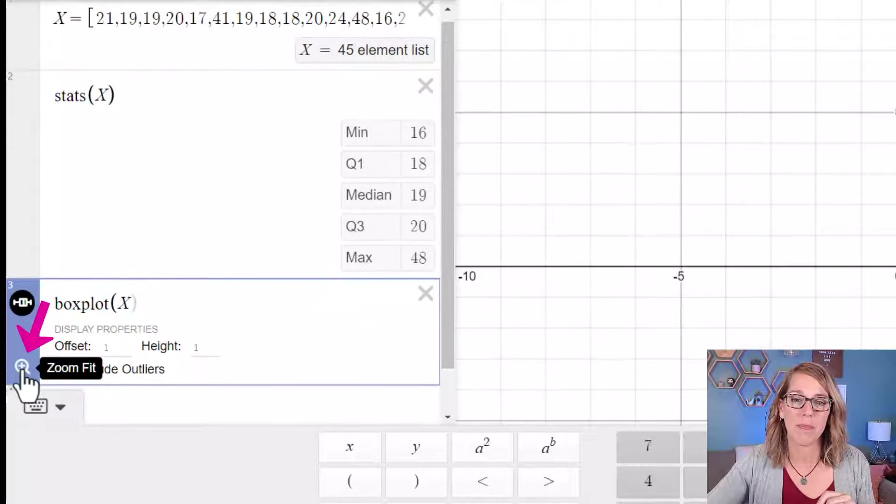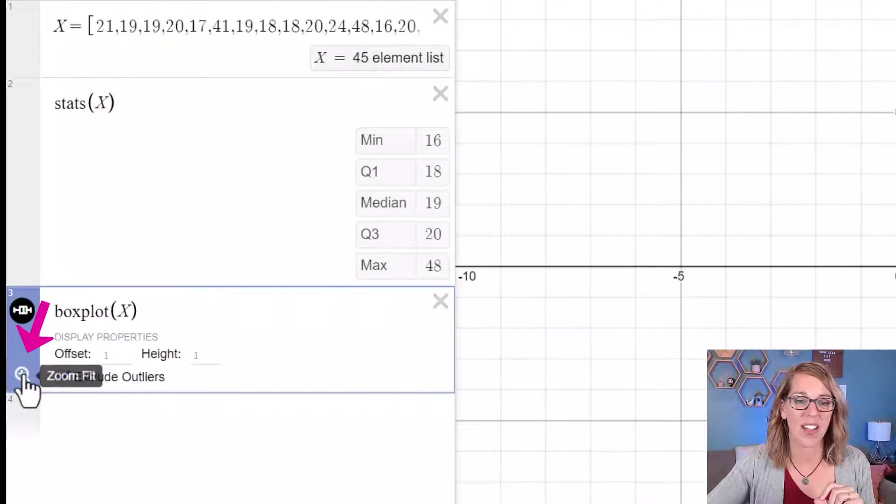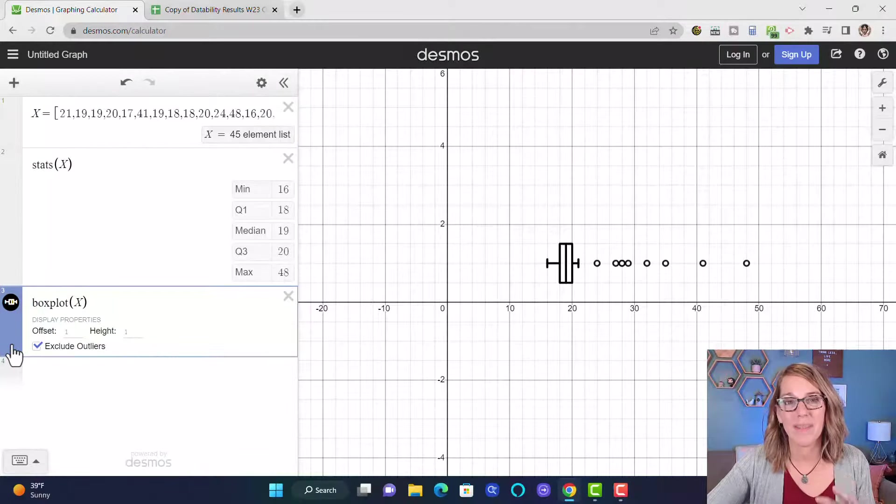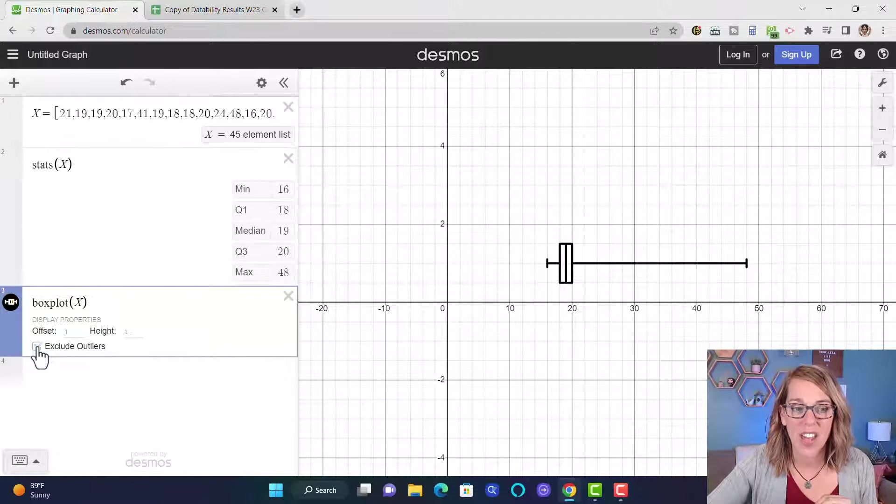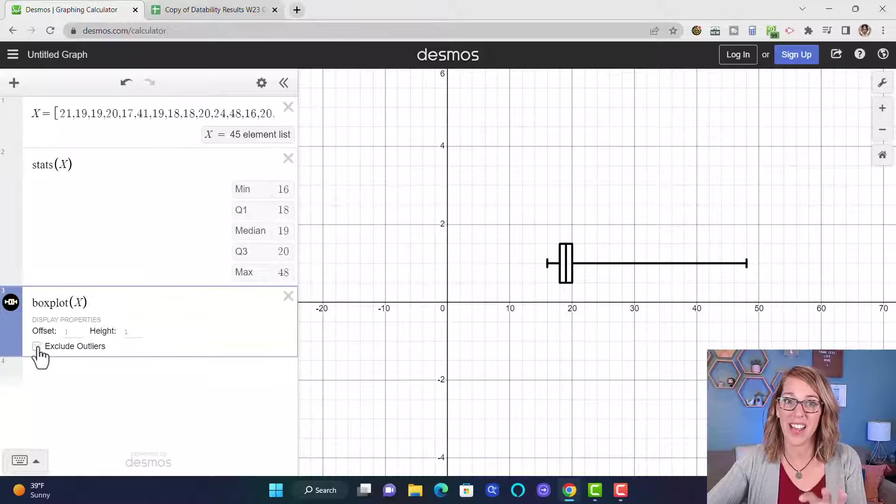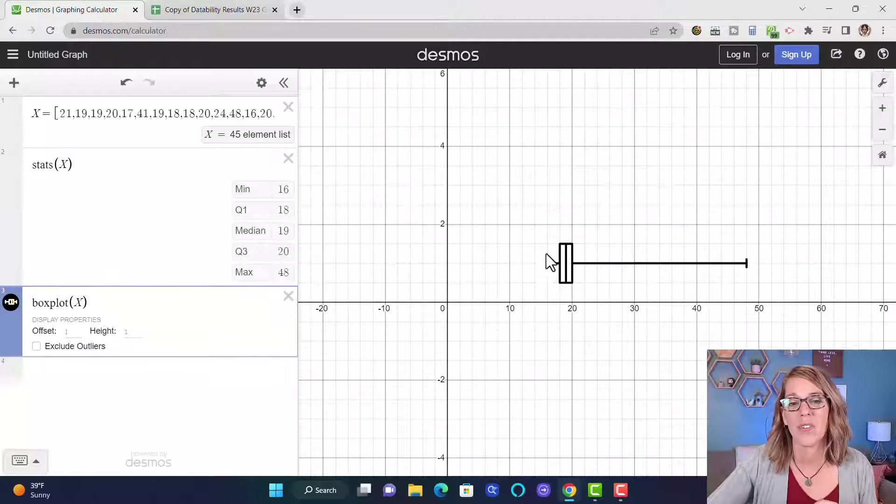I'm going to click on the zoom fit button. That's this magnifying glass here, and that will get me to my box plot. I can also uncheck exclude outliers if you want this style of a box plot.